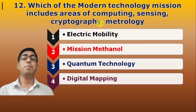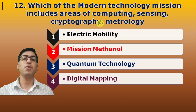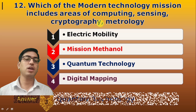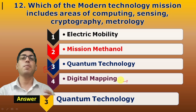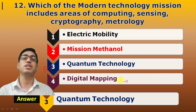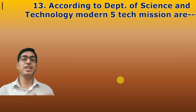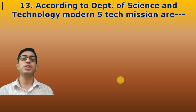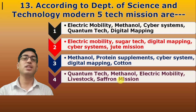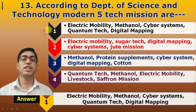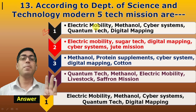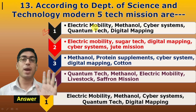Twelfth question: Which modern technology mission includes the areas of computing, sensing, cryptography, and metrology? According to the Department of Science and Technology (DST), five modern technology missions are included. The answer is Quantum Technology. The five modern technology missions under DST are: (1) Electric Mobility, (2) Methanol, (3) Cyber Systems, (4) Quantum Technology, and (5) Digital Mapping.